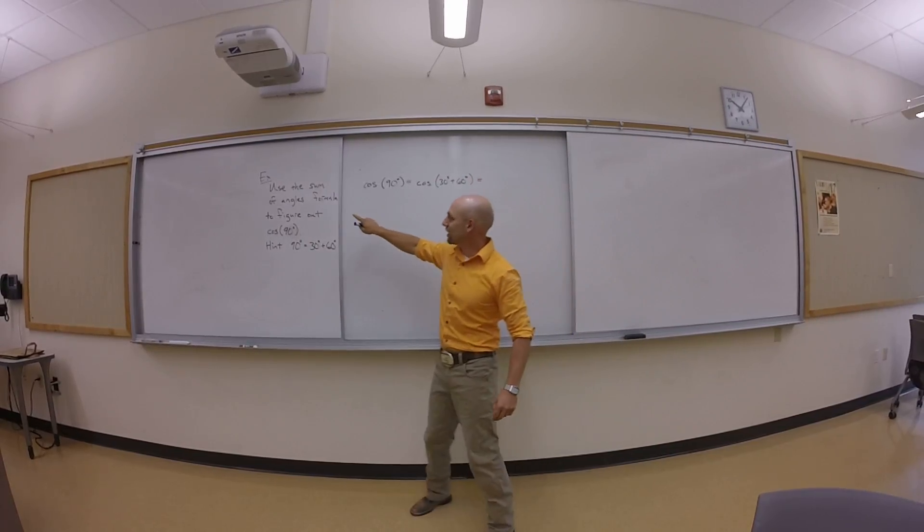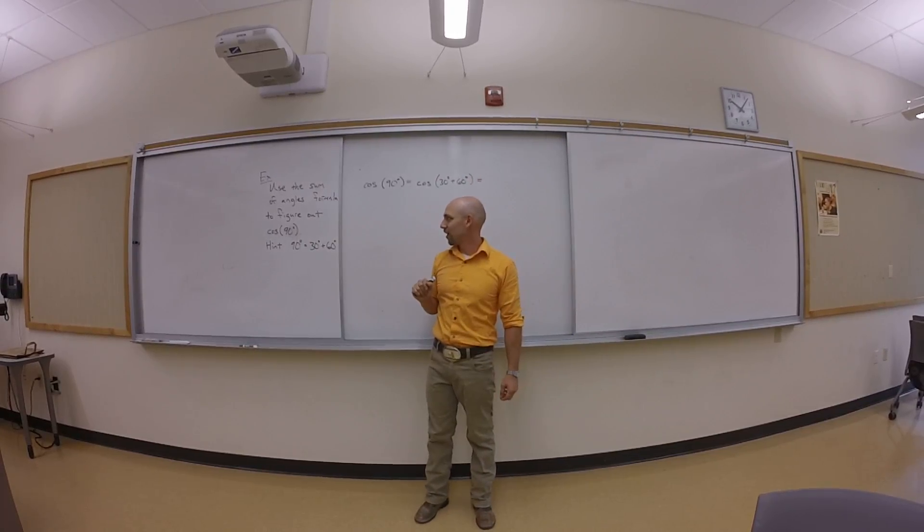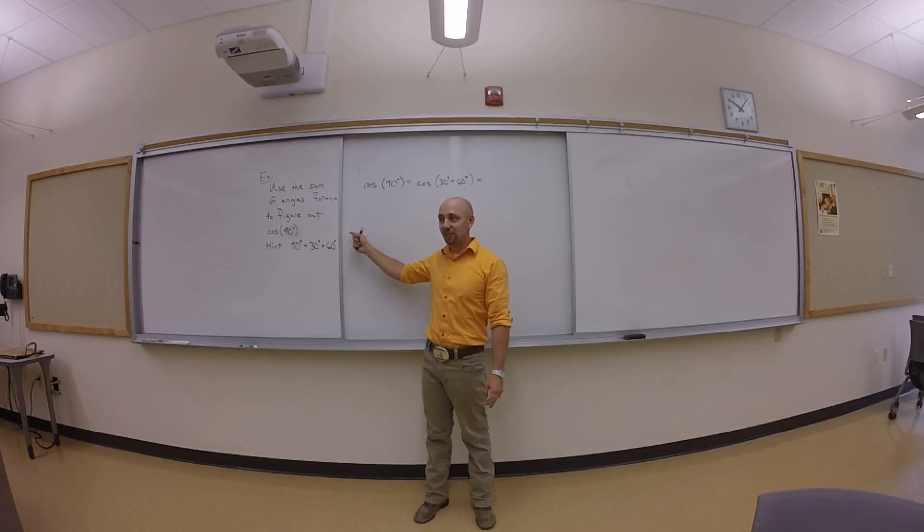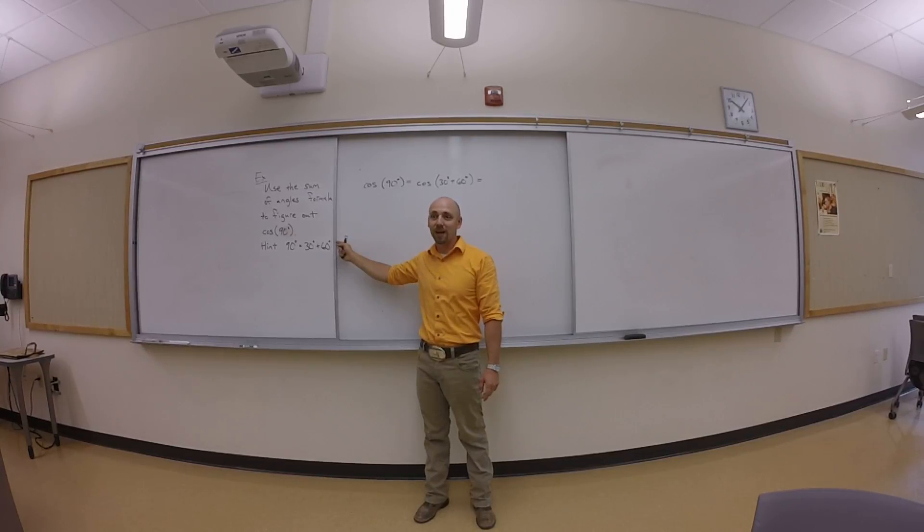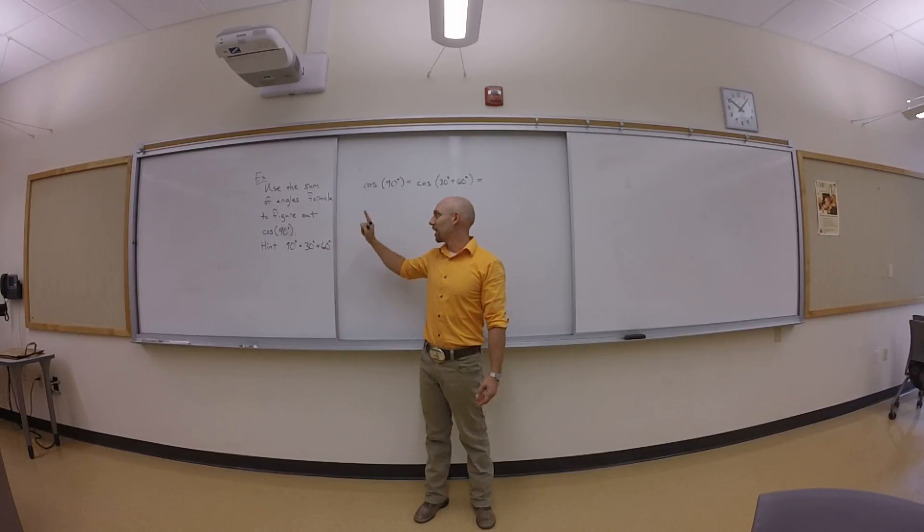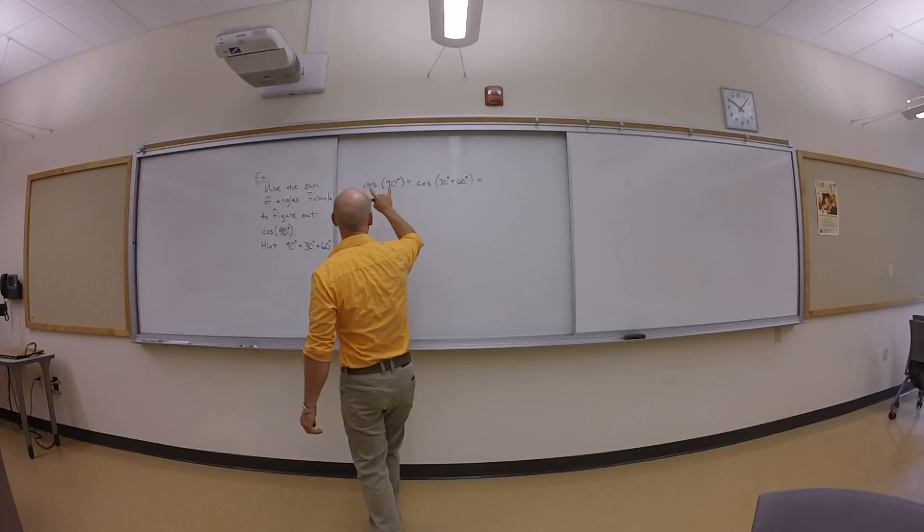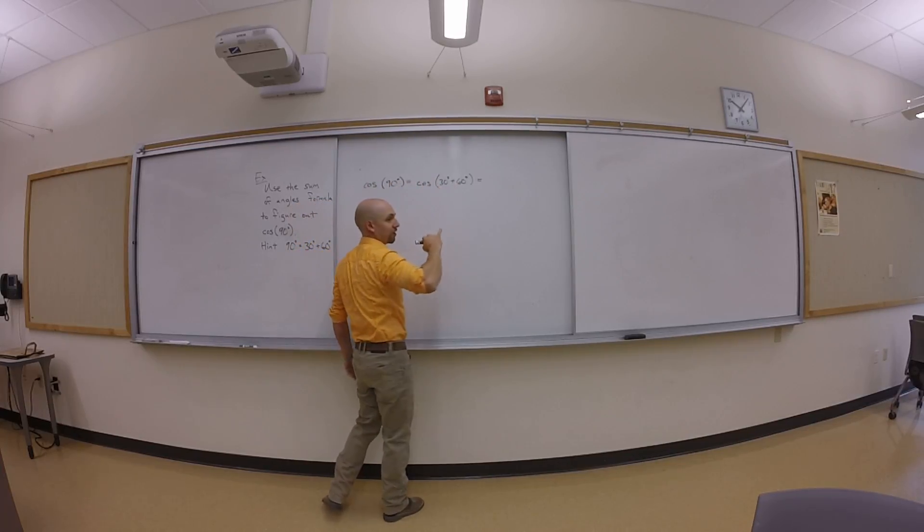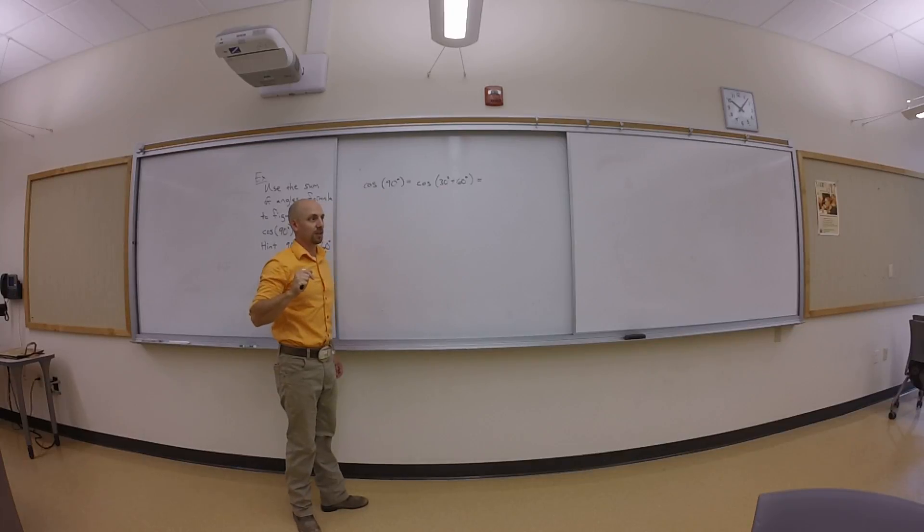I want to use the sum of angles formula to figure out cosine of 90 degrees, which seems like a really stupid question. Really, I'm trying to verify that this silly sum of angles thing works the way I think it does. I want to think about cosine of 90 degrees as cosine of 30 degrees plus 60 degrees. And now I need to bust out the formula.